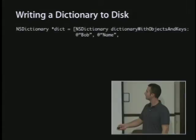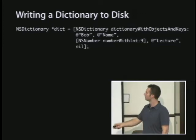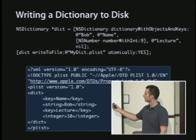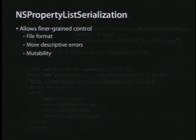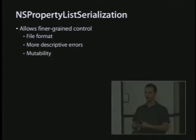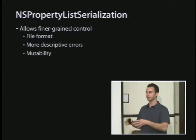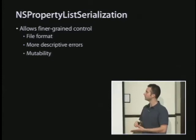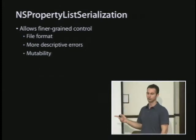Dictionaries are the same idea — you have keys and values: strings, numbers, data, anything you want. You write that out and you get a data object with keys and values for each thing you added. The writeToData and initFromPath methods don't give you the option to specify the format, so there's a class called NSPropertyListSerialization on iPhones and Macs that lets you pass format options and get back errors.